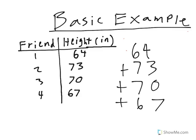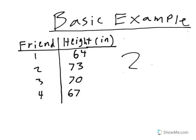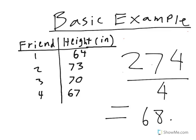That equals 274. So now we take 274 and divide by 4, since there are 4 friends that we have measured the height of. That equals 68.5, which is our mean.